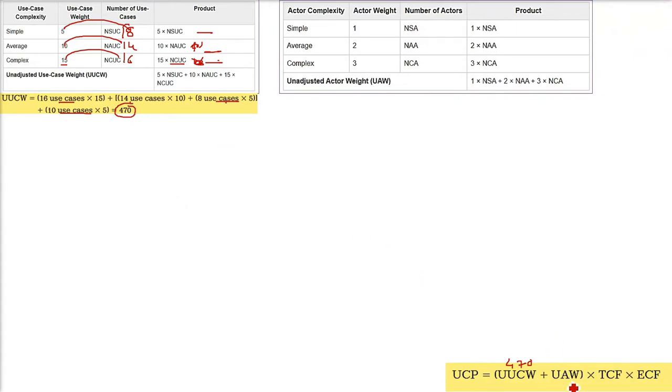UAW. How to find out the UAW? UUCW already found out. Unadjusted Use Case Weight. Now we are going to the actors. How many actors were there? 8 simple actors, 12 average actors and 2 complex actors. Now multiply them. 8 into 1 is 8, 12 into 2 is 24, 3 into 3 is 9. Just add them. You will get 44. You already computed it. So I am just writing it.